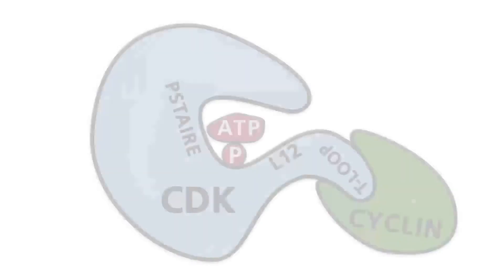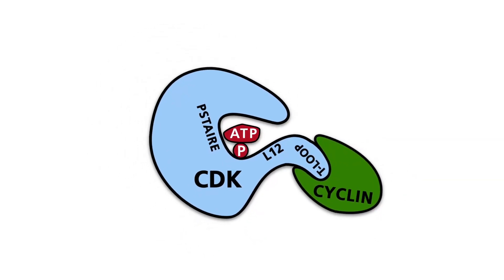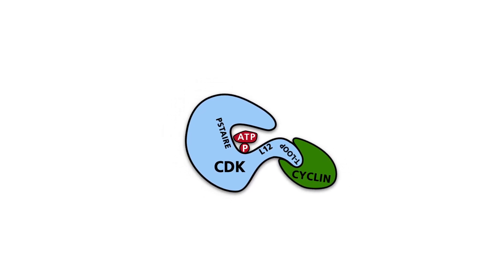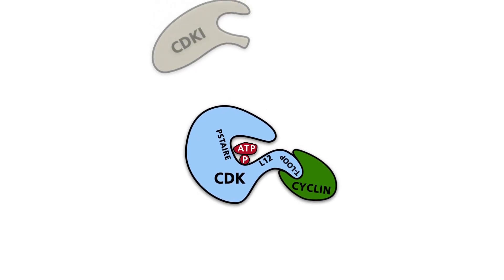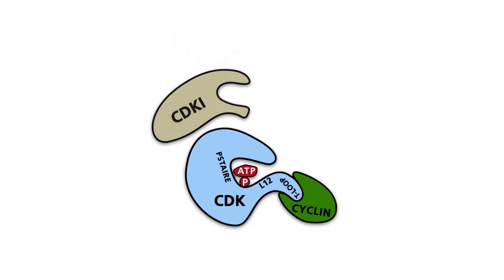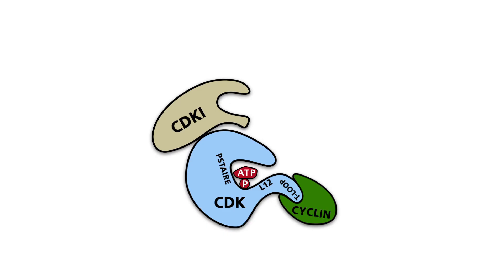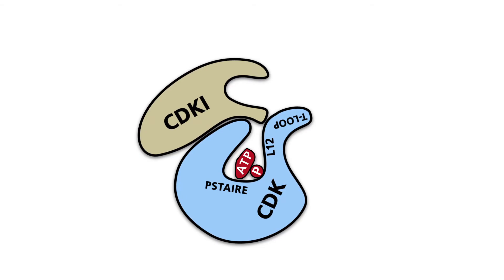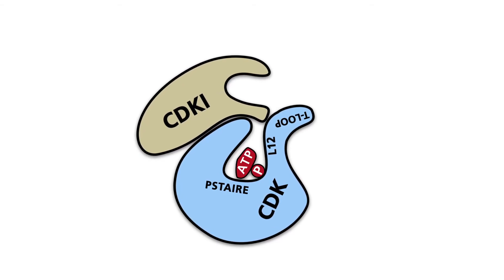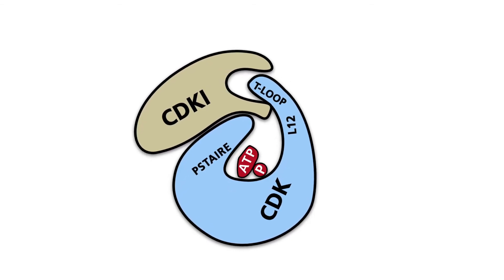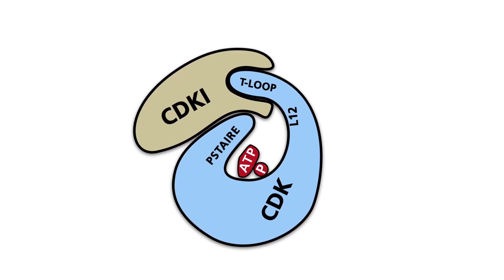CDKs can be inactivated by degradation, but also by interaction with specific CDK inhibitors. The typical inactivation mechanism is based on the binding of a CDK inhibitor to the CDK-cyclin complex and a partial conformational rotation of the CDK. The cyclin is thereby forced to release the T-loop and dissociate from the CDK. Furthermore, the CDK inhibitor is able to insert a small helix into the cleft, blocking the cleft and also blocking the active site of the CDK.